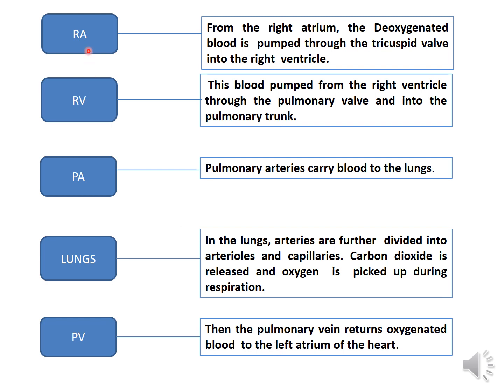To summarize pulmonary circulation: the right atrium receives venous blood and ejects it into the right ventricle. The right ventricle ejects blood into the pulmonary circulation. The pulmonary artery carries this blood to the lungs for oxygenation. In the lungs, oxygenation takes place and pulmonary veins carry oxygenated blood back to the left atrium.